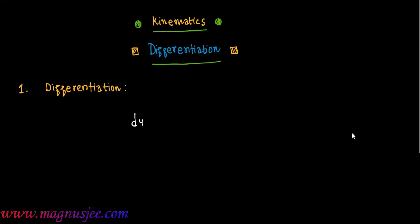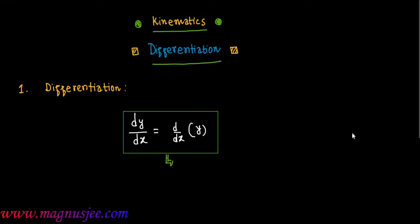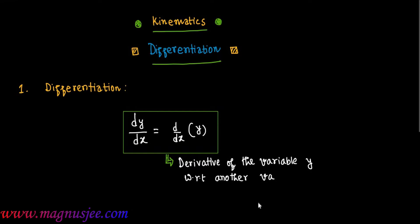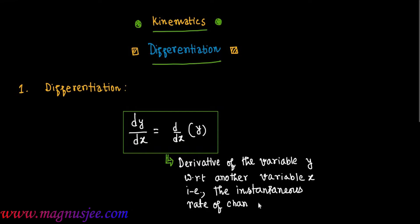Differentiation and its application in physics. First we have to know what differentiation is. dy/dx is equal to d/dx of y. This is known as the derivative of y — the derivative of the variable y with respect to x (wrt means with respect to). This is also known as the instantaneous rate of change of y with respect to x, where dx is the small change in x.